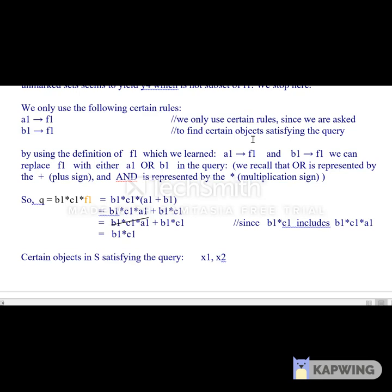Then we apply the value of F1 in the query, so it can be either A1 or B1. We substitute A1 or B1 here and we have B1*C1*A1 and B1*C1. Since B1*C1 is a more generalized set compared to B1*C1*A1, and B1*C1 is included here, we just omit B1*C1*A1 and we just include B1*C1.